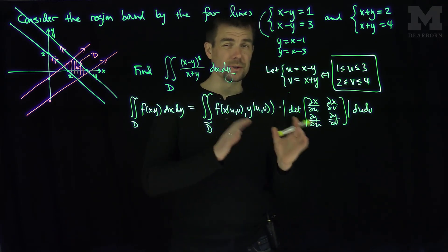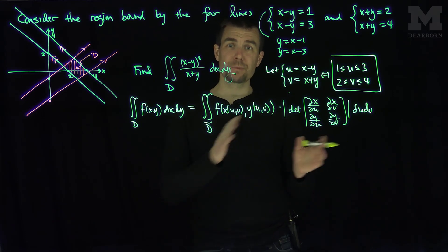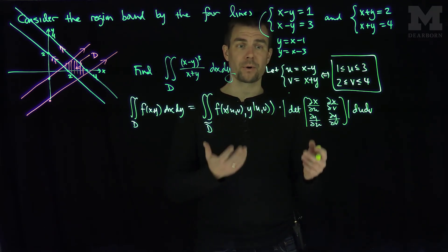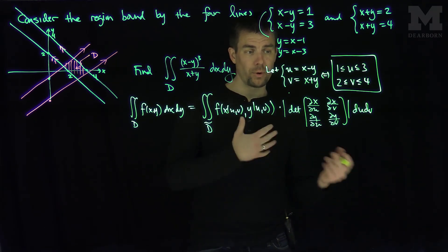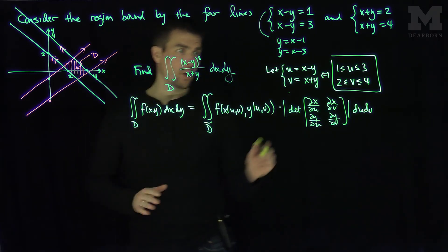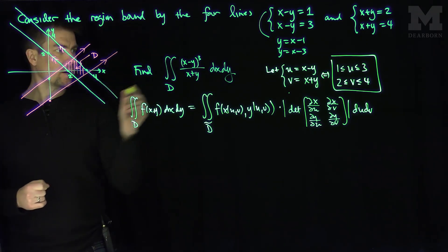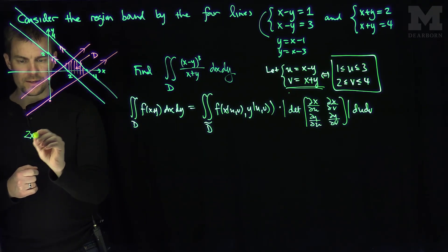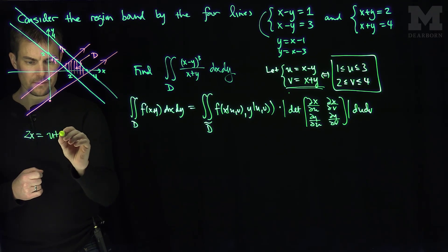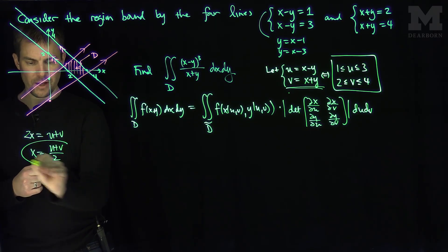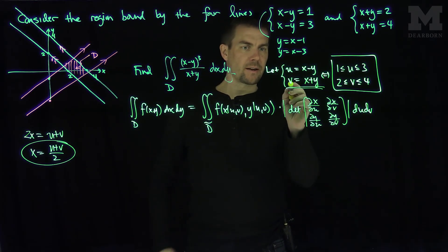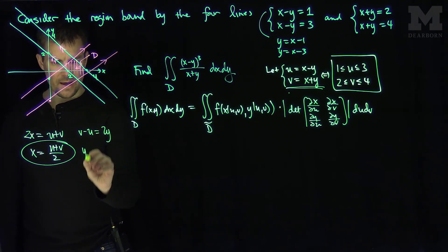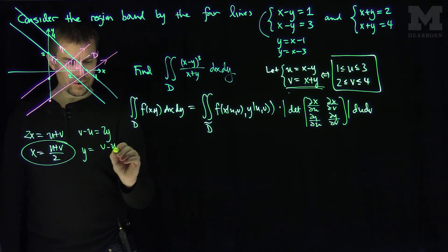Since this is a linear transformation, I can find x and y explicitly in terms of u and v. Adding the two equations u = x minus y and v = x plus y gives 2x = u plus v, so x equals (u plus v)/2. Taking v minus u gives 2y, so y equals (v minus u)/2.